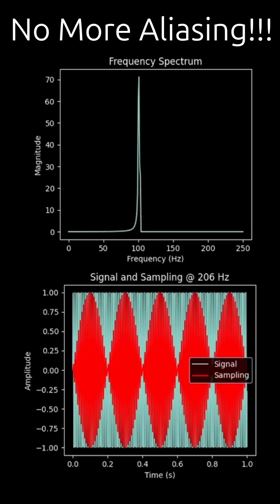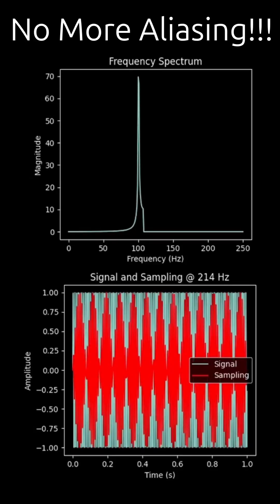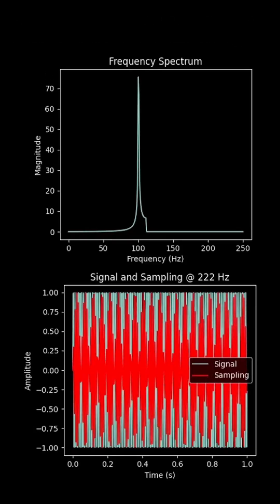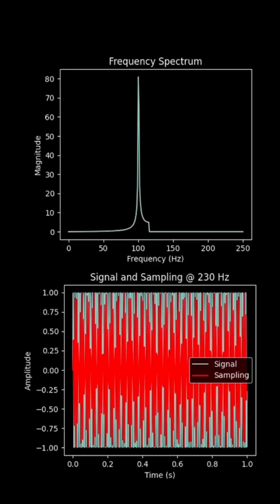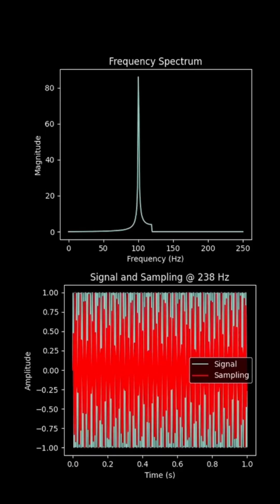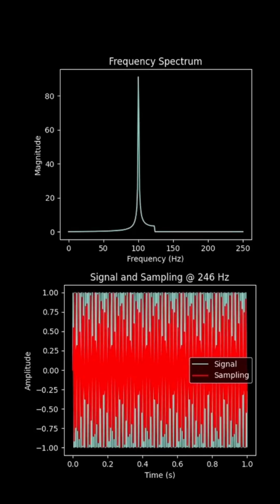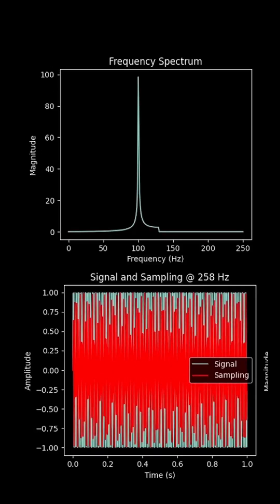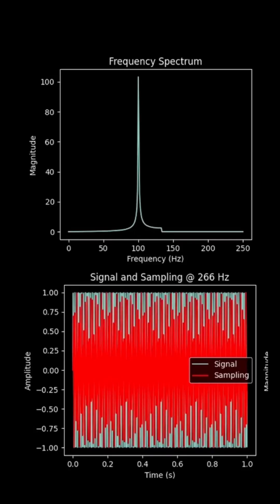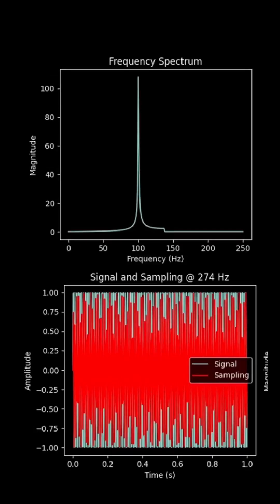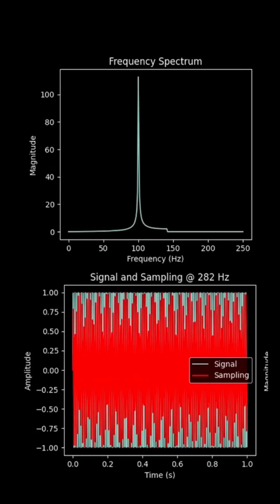And now that we're above 200 hertz, you can see we are measuring that 100 hertz frequency and it's actually completely stopped dead in its track. Our spike is no longer moving. As a matter of fact, the only thing that's happening to it is its amplitude is growing. And that's because now we are appropriately sampling our signal to be able to measure this 100 hertz frequency.